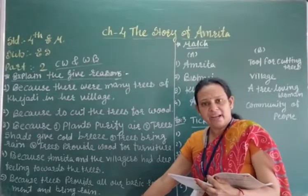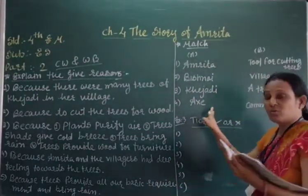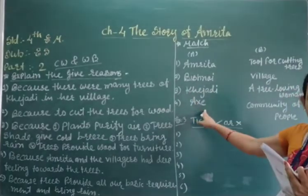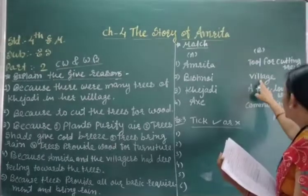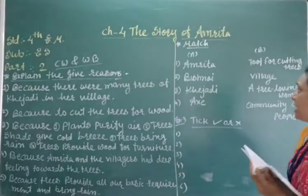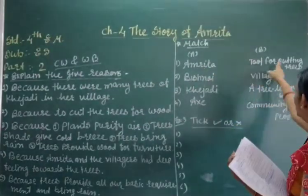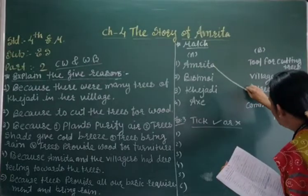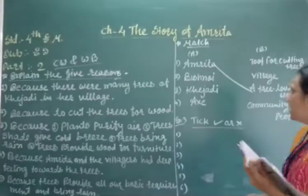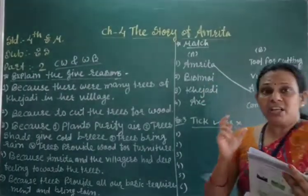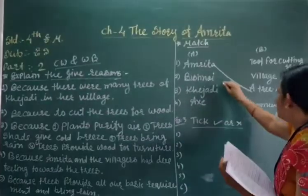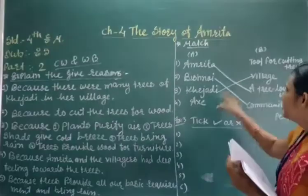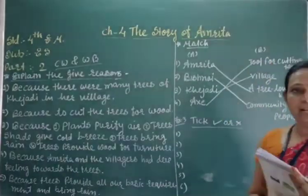This you have to write in CW and HW. Now look here — it is the match the following, also in the CW and HW. Here we have: Amrita, Bishnoi, Kejri, and Axe. The options are: tools for cutting tree, village, tree-loving woman, community of people. Amrita is the tree-loving woman — match with tree-loving woman. Bishnoi is the community of people. Khejri is the village — name of the village. And Axe is the tool for cutting trees.